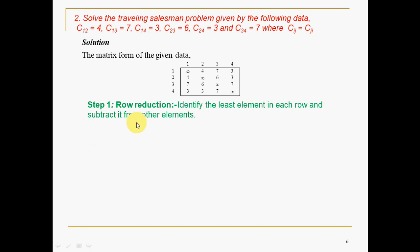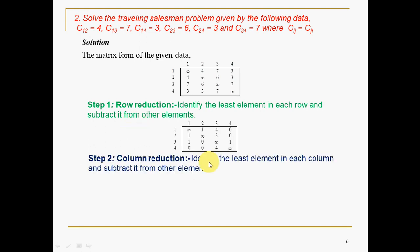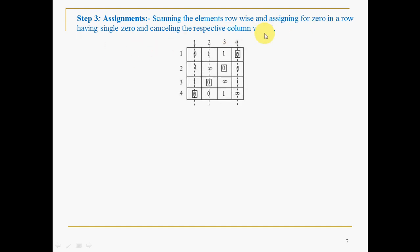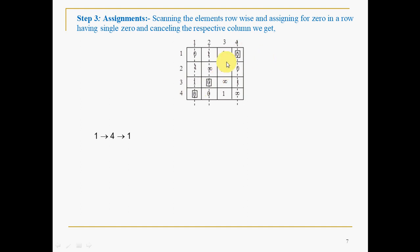After writing the matrix, the solution procedure is: row reduction — identify the least element in each row and subtract from other elements; then column reduction — identify the least element in each column and subtract from other elements. This gives the reduced matrix ready for allocations. Scanning row-wise and assigning zeros using the Hungarian assignment technique, if a row has two zeros leave it and proceed to the next. After completing assignments, the number of allocations equals the order of the matrix (4), so it is declared optimal.